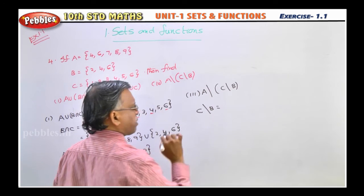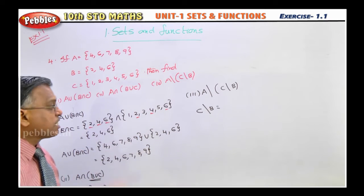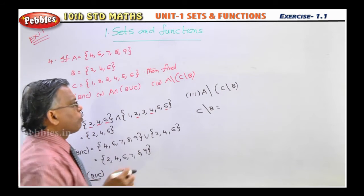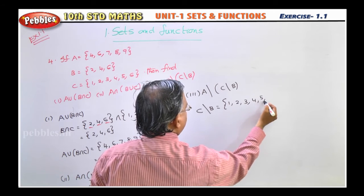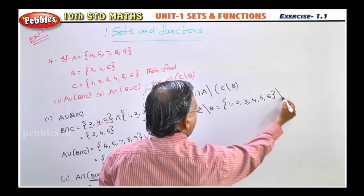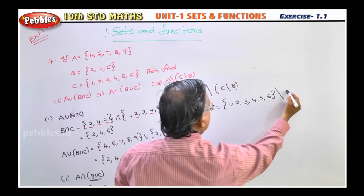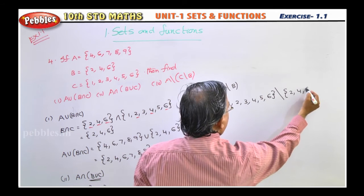C slash B. So what is the meaning of C slash B? The elements which are present in C but not in B. So first you write on C set: 1, 2, 3, 4, 5, 6. Slash. What is B set here? 2, 4, 6. 2, 4, 6.